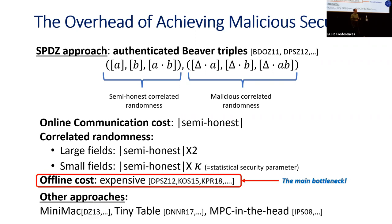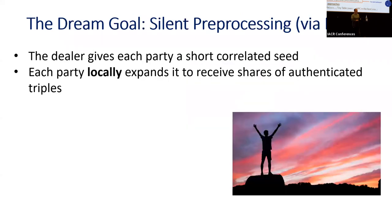There are also other approaches which give different trade-offs between the online and the offline. A new direction in MPC which sets a dream goal is to have silent pre-processing using PCGs, which stands for pseudorandom correlation generators.